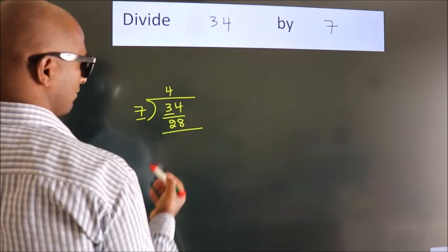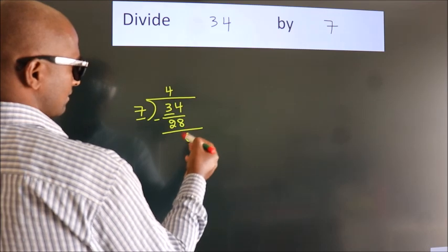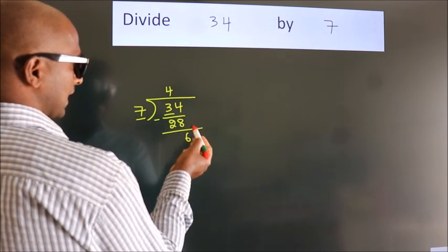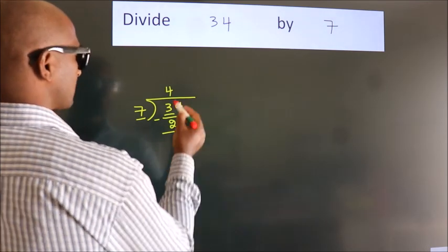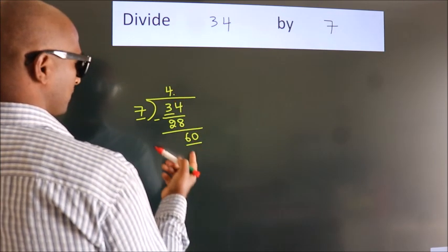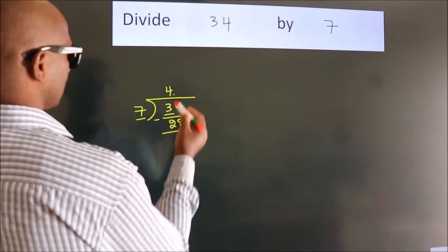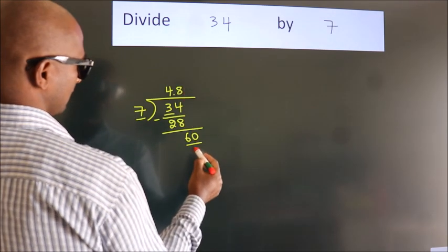Now we subtract and get 6. After this, no more numbers to bring down. So what we do is put a dot and take 0, giving us 60. A number close to 60 in the 7 table is 7×8=56.